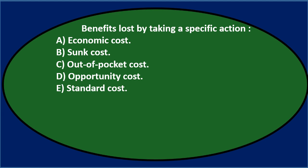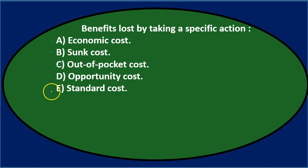Let's use the process of elimination again. Option A, economic cost — that might seem familiar. Option B, sunk cost — benefits lost by taking a specific action does sound familiar for this, so I'll keep it. Option C, out-of-pocket cost — that sounds like a cash flow type of cost, so I'll cross that out. Option D, opportunity cost — that's a term we should recognize. Option E, standard cost — that's used a lot in budgeting as an estimated cost, so it probably doesn't apply here. We'll keep A, B, and D.